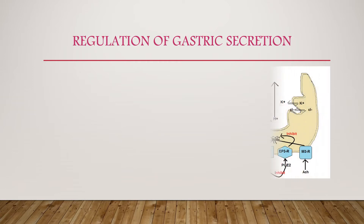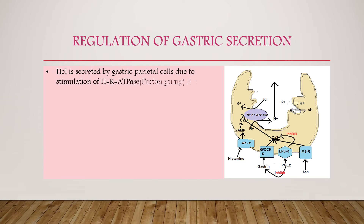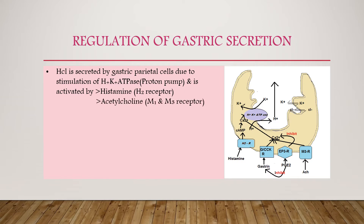Now let's see how gastric secretion is regulated. The figure shows the structure of gastric parietal cells. H2R in the figure represents histamine receptor; CCKR is the gastrin or cholecystokinin receptor; M3R is the muscarinic receptor.